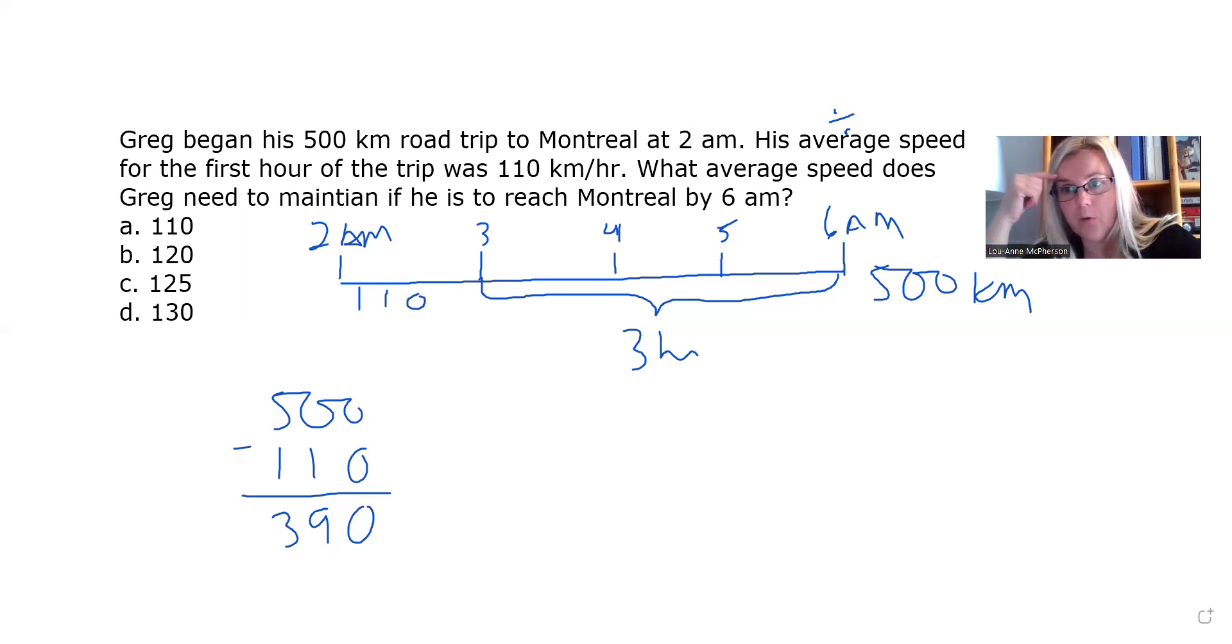If you don't know your word problem vocabulary, definitely send me a message and book a tutoring session, so you can get the knowledge you need. Coming back, you know that average means to divide, so you're going to divide the remaining time you have into your total kilometers, so we've got 390 kilometers left to go over 3 hours. And that is going to give you 130, and that unit is kilometers. So there's your answer there.